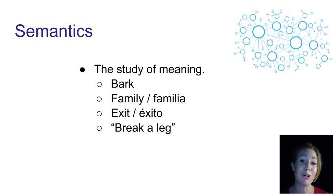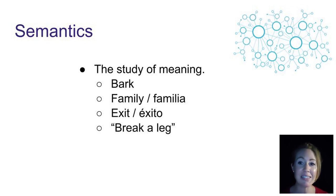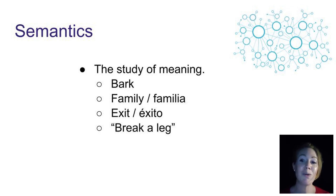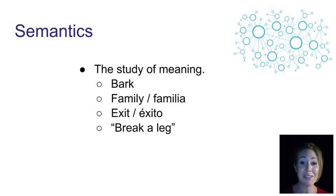In semantics, we study the meaning of words, phrases, sentences, and text. We look at why 'bark' and 'bark' are spelt the same and sound the same but mean different things when we say 'I bark at the tree bark.' We look at how the English word 'family' means the same thing as the Spanish word 'familia,' but also how the English word 'exit' does not mean the same thing as the Spanish word 'éxito.' We also explore why phrases like 'break a leg' can be really confusing to language learners — where on the one hand it sounds awful to wish a broken leg on someone, but in English it actually means to wish someone luck.